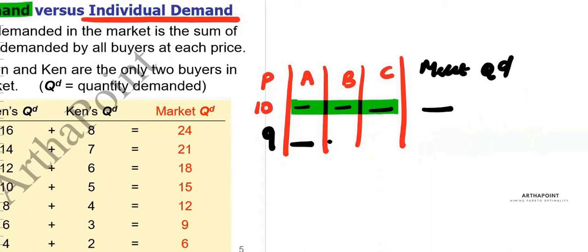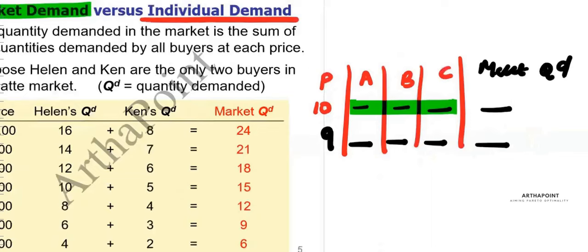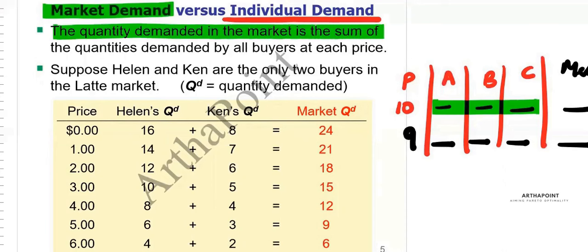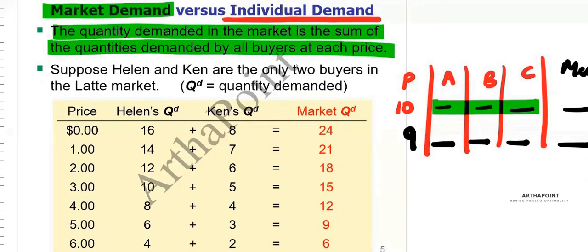Similarly, when price is 9, what is demand by A, B, C? I add them together and I get the market demand. However many individuals exist in the market, if you add the quantity demanded by each individual together, then you get the market demand. The quantity demanded in the market is the sum of the quantities demanded by all buyers at each price.